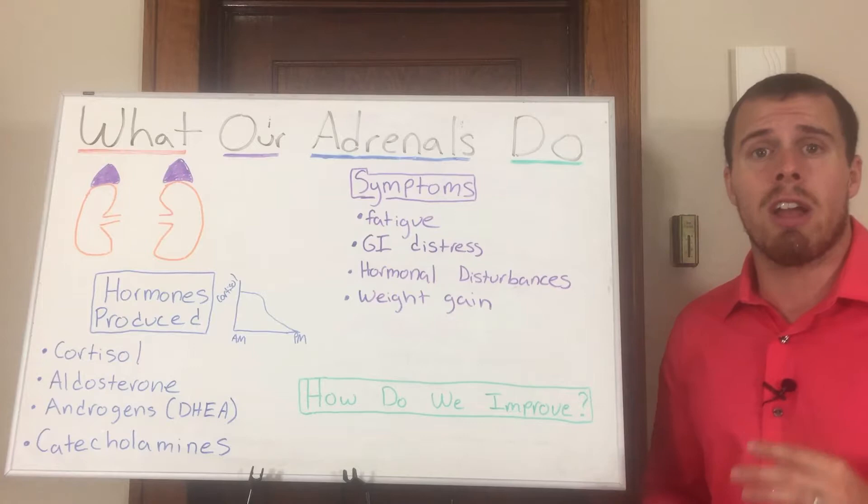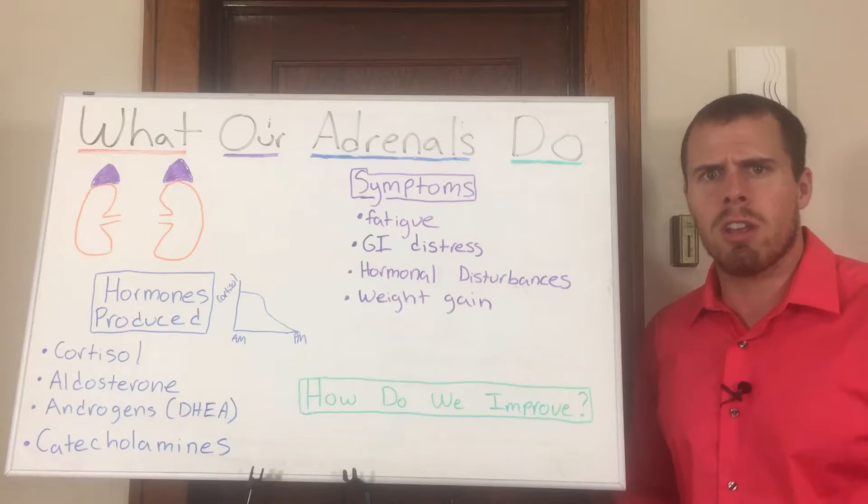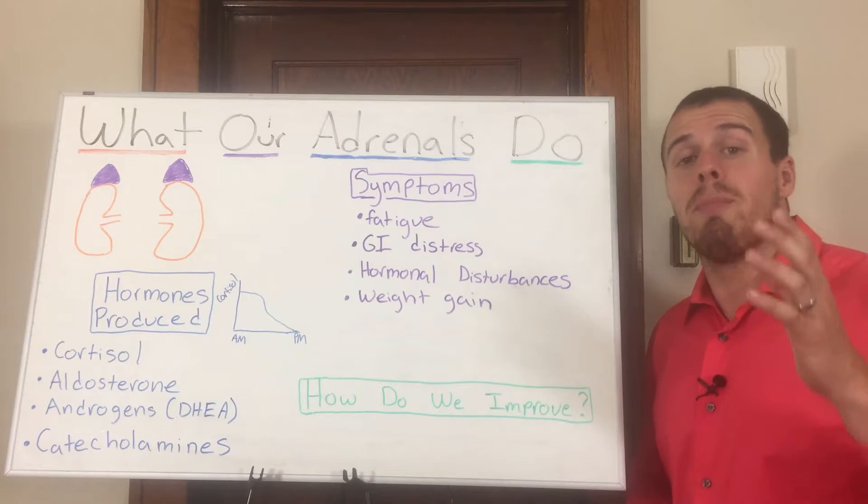Then we talk about GI distress. Going back to secretory IgA — if we have that first line of defense down, we're more susceptible to getting those pathogens. We're more susceptible to dysbiosis, leaky gut, and intestinal impermeability. So we're basically having a difficult time preventing those invaders from making a home.